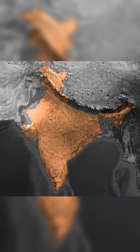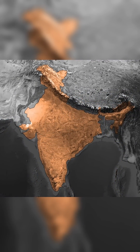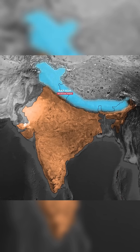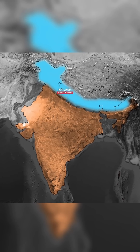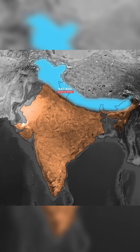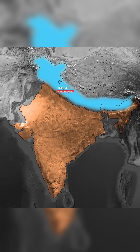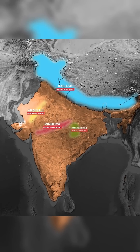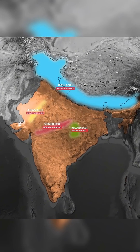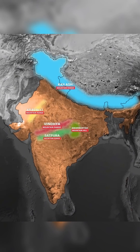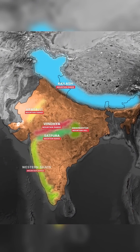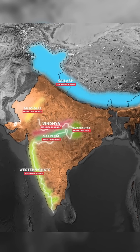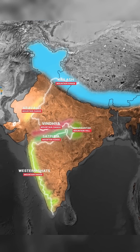The reason lies in the physical geography of our country. Features like the Kailash Range of the Himalayas in the north, followed by the Aravalli Range, the Vindhya Range, Amarkantak Hills, the Satpura Range, and the Western Ghats act as a natural water divide line.